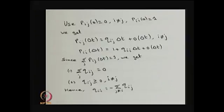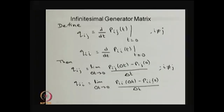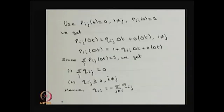Similarly, substituting p_ii(0) equal to 1, we get that p_ii(delta t) equals 1 plus q_ii times delta t plus an o-order term of delta t, where that o-order term also tends to 0 as delta t tends to 0.